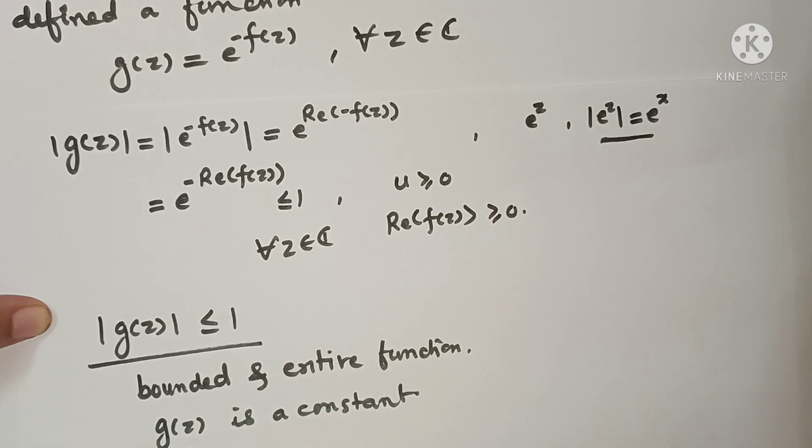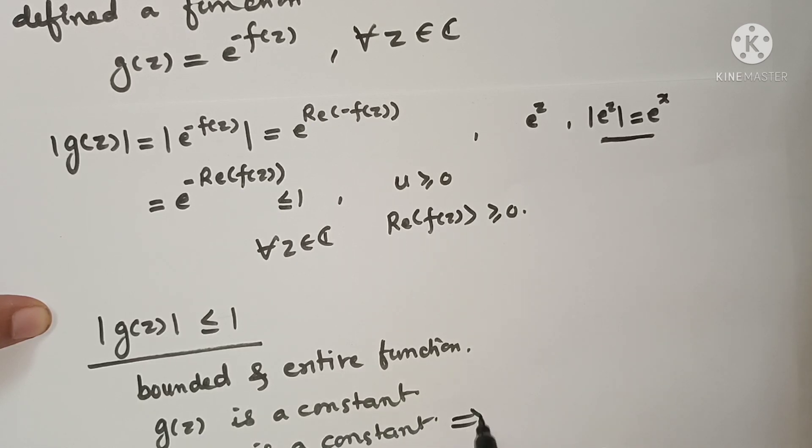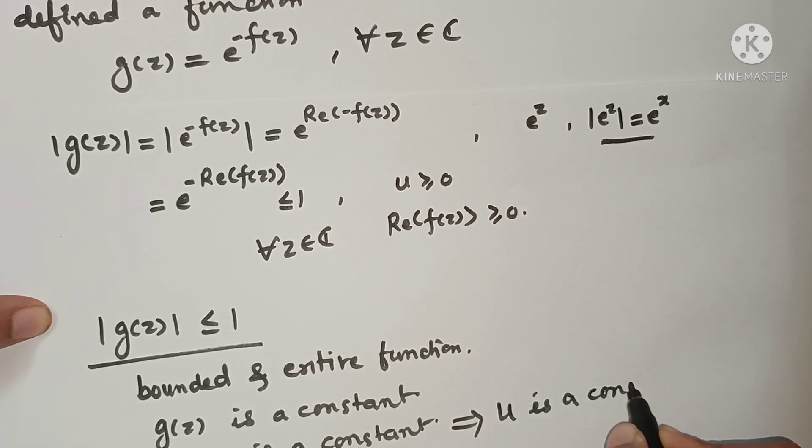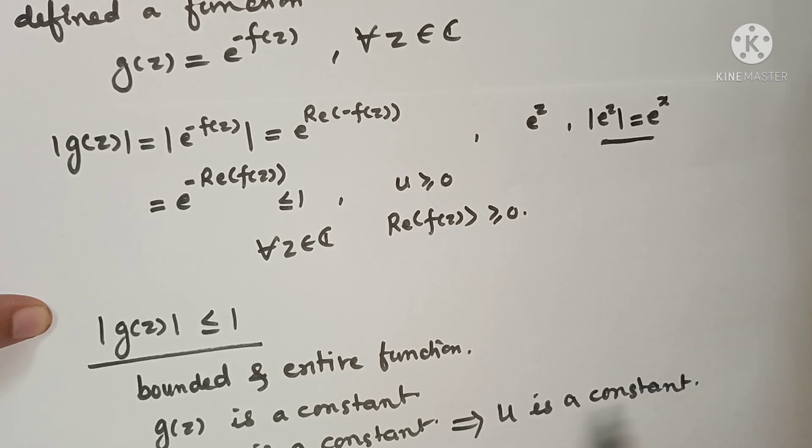That implies F(z) is also a constant function. If it is constant function, this implies the real part U is a constant function.